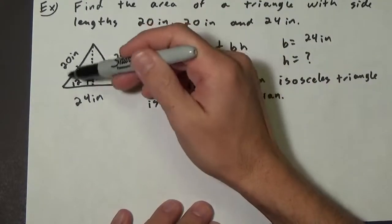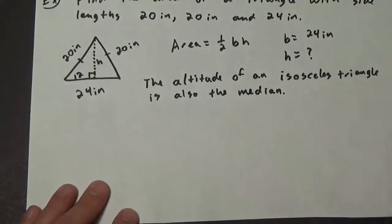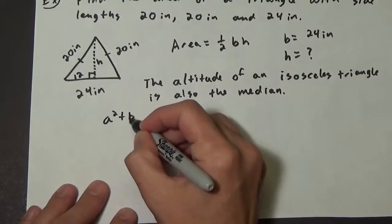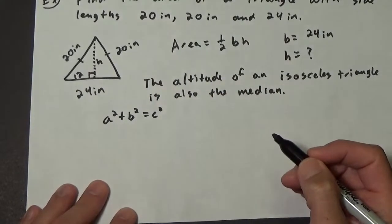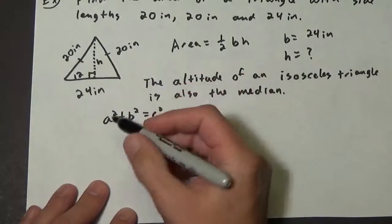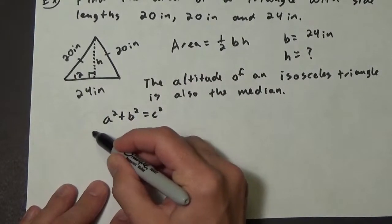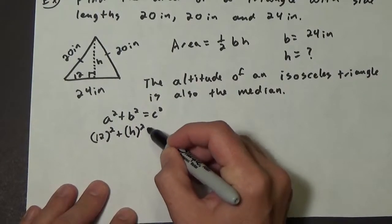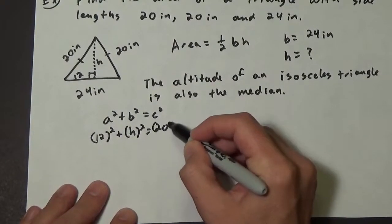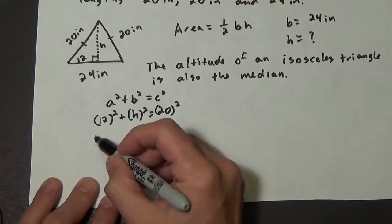So here we have a right triangle, and we can use the Pythagorean theorem: a² + b² = c². We would have 12² + h² = 20², so that is 144